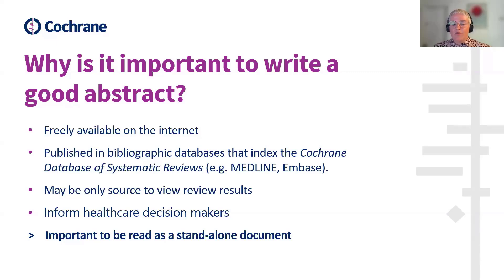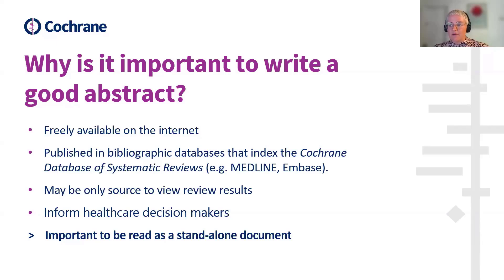Abstracts of Cochrane reviews are made freely available on the internet. They're also published in bibliographic databases that index the Cochrane Database of Systematic Reviews, such as Medline and Embase. Some readers may be unable to access the full review, or the full text may not have been translated into their language, so abstracts may be the only source they have to view the review results.